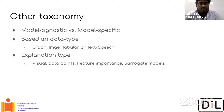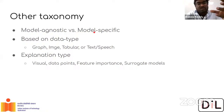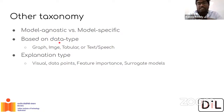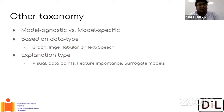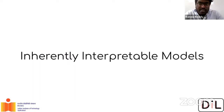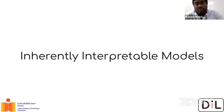Other taxonomy dimensions include model-agnostic versus model-specific — some algorithms are independent of the classifier type, some are specific to certain classifiers. Some work on only certain data types. Based on explanation type: is it a visual explanation, feature importance, data points, or a surrogate model? As the theory evolves, more types of explanations are coming up. Now let's look at some examples, specifically starting with inherently interpretable models.